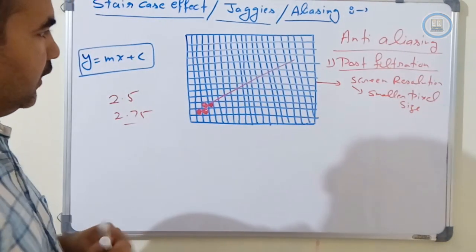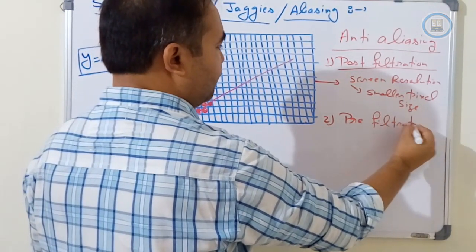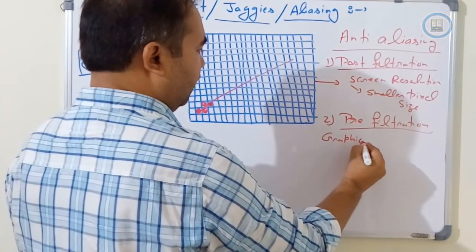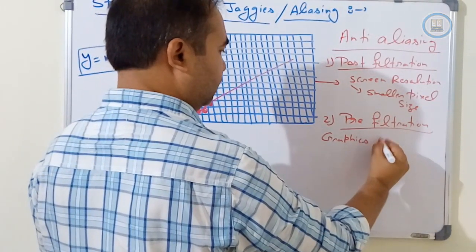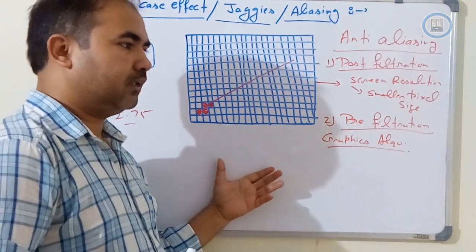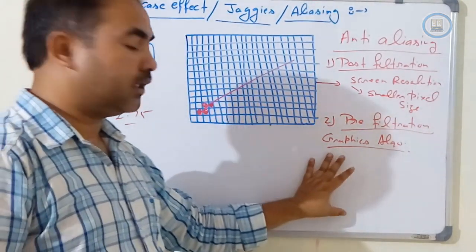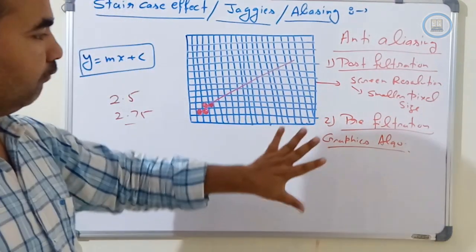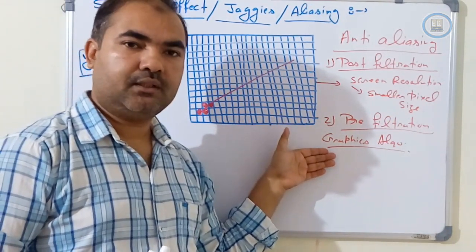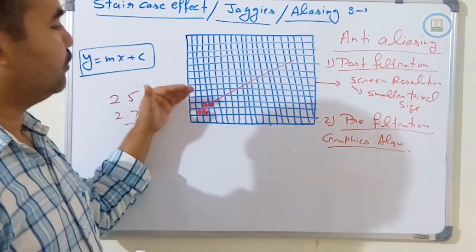The second method is called the pre-filtration method. In this approach, we use graphics algorithms or graphics primitives — such as line generation algorithms, circle generation algorithms, and ellipse generation algorithms — to convert vector images into raster format. Before displaying the images, these algorithms use best approximation values on the graphics processor to rectify the jaggy's problem.